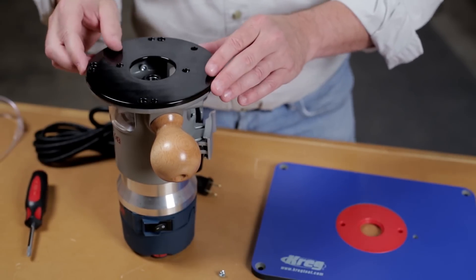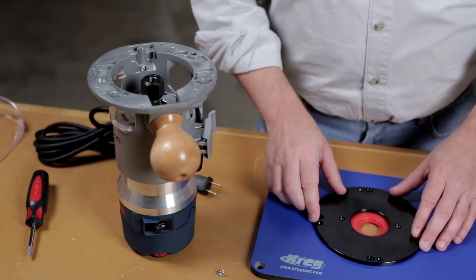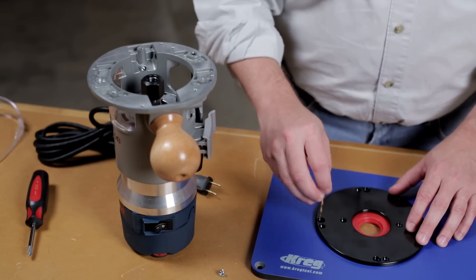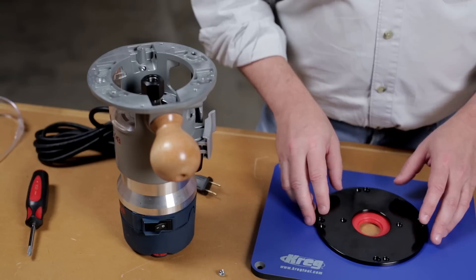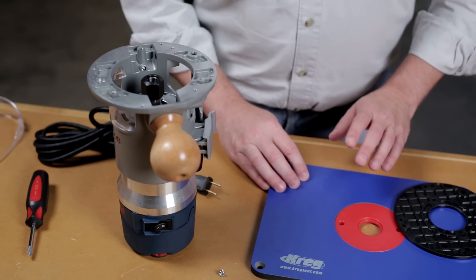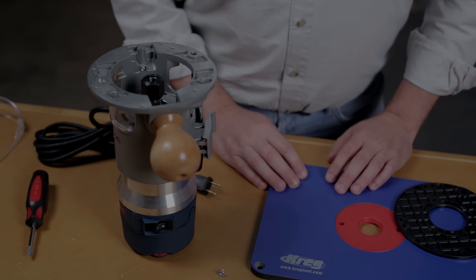First, you'll remove the subbase from your router, put it on the plate, and use it as a guide as you drill the mounting holes. Then you'll mount the router to the plate. Sounds simple enough, and it is, but there are a few details you need to pay attention to to make sure you do it right.